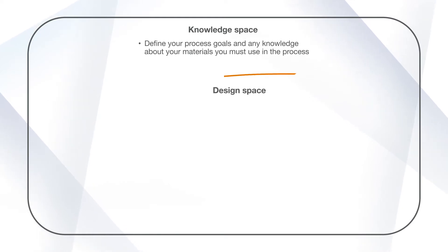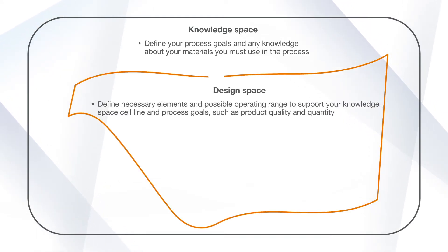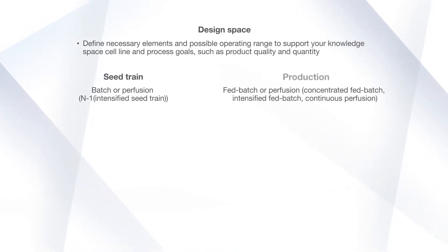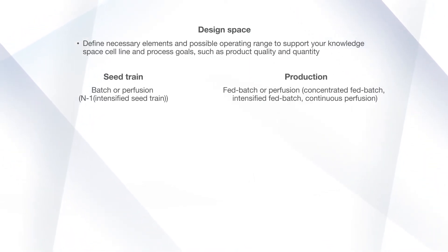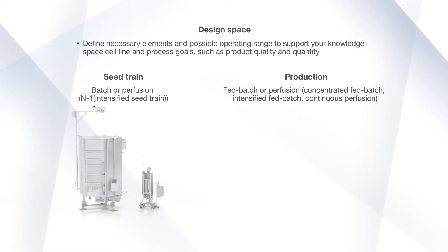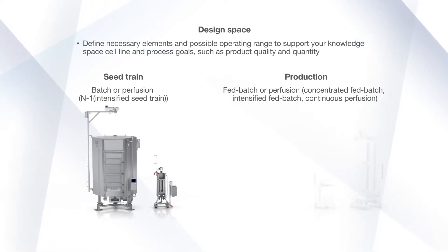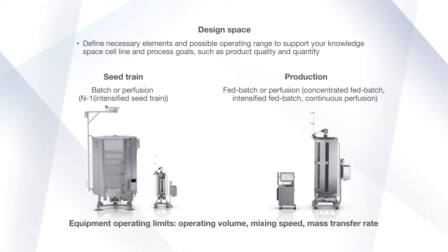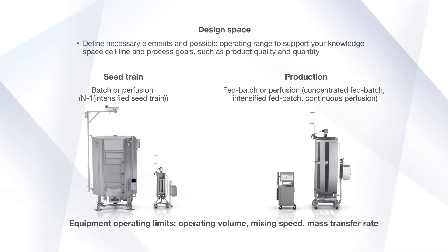In the design space, you define necessary elements and possible operating range to support your knowledge space cell line and process goals such as product quality and quantity. This is done by determining the best process type to match the production needs identified in the knowledge space. Once that is done, the equipment necessary to support the chosen process has to be selected. Finally, once the equipment is selected, the practical operating limits for the process can be used to build the design space.